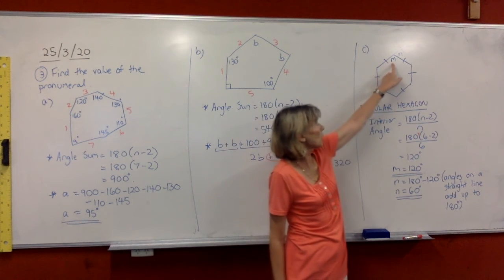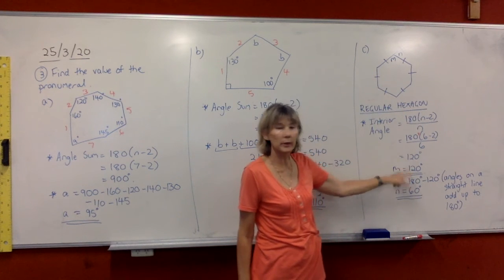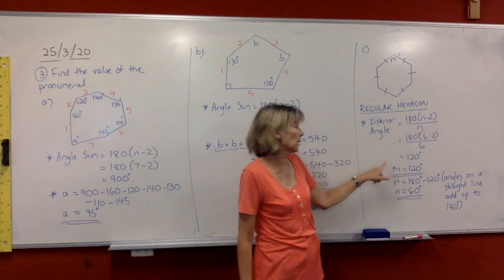So that means the size of the angle inside the hexagon is 120 degrees. So m will equal 120 degrees.